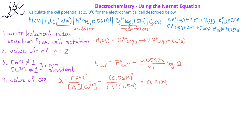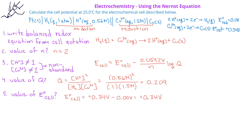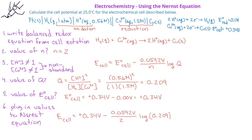When we do this calculation, we find that the reaction quotient has a value of 0.209. The Nernst equation also requires a standard cell potential. We're given the reduction half potentials for both half reactions, so when we plug these into our equation for the standard cell potential, we get a standard cell potential of plus 0.34 volts. Plugging all values into the simplified Nernst equation, the cell potential has a value of plus 0.36 volts.